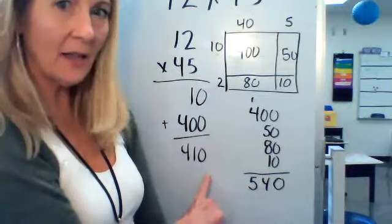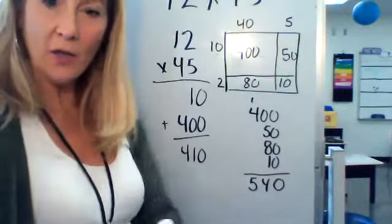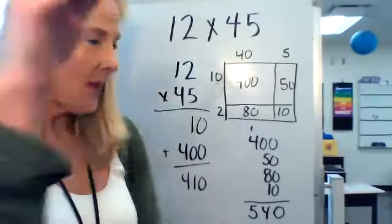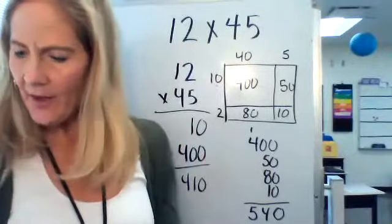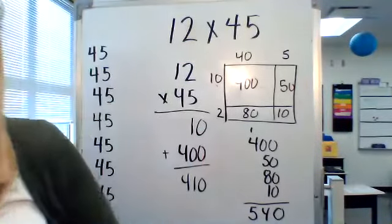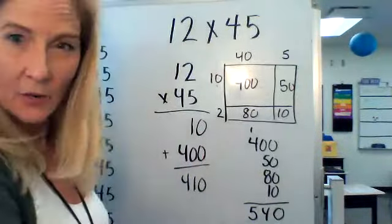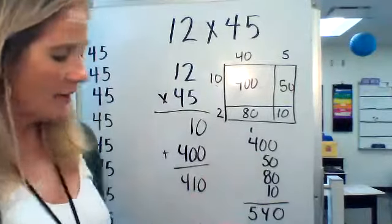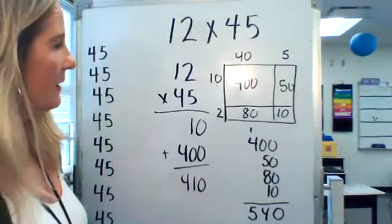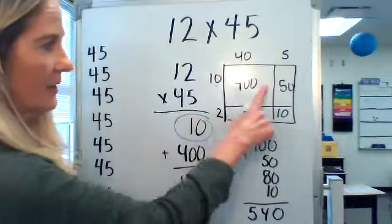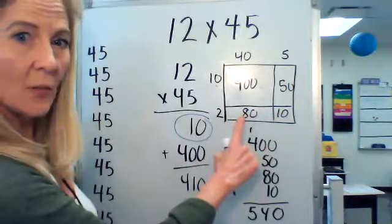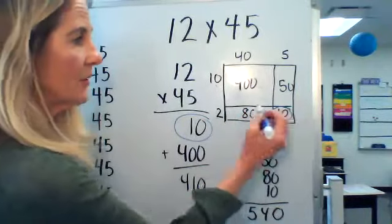Let's take a look. Let's analyze our model, our open area model, and the products that we got there and the products that we got when we did it in a stacked way. I see that I've got—let's see—I see 10 here. Do you see 10 as one of the products in this open area model? Sure, it's right there.